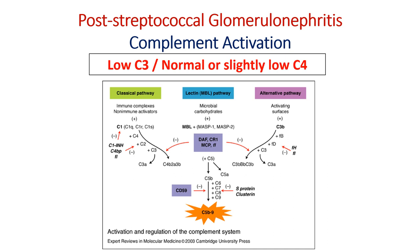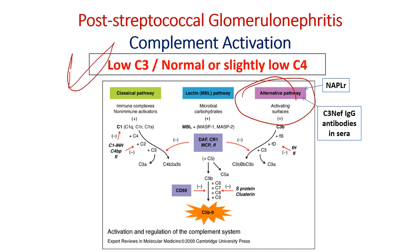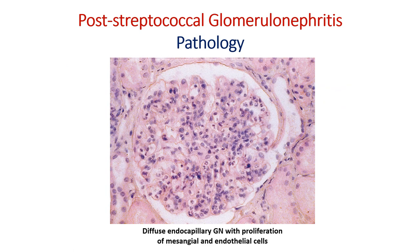Regarding complement activation in post-streptococcal infection: the alternative pathway is activated, stimulated either by the plasmin receptor or by C3 nephritic IgG antibodies in the serum formed against streptococcal components. When the alternative pathway is active, you will find low C3 and mainly normal C4, or in a small number of cases slightly low C4.